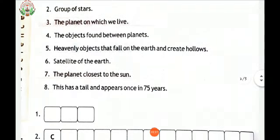Fifth, heavenly bodies that fall on the earth and create hollows. Meteoroids are objects in space that range in size from dust grains to small asteroids. Think of them as space rocks. When meteoroids entered earth atmosphere or that of another planet like Mars at high speed and burn up, the fireball or shooting stars are called meteors.